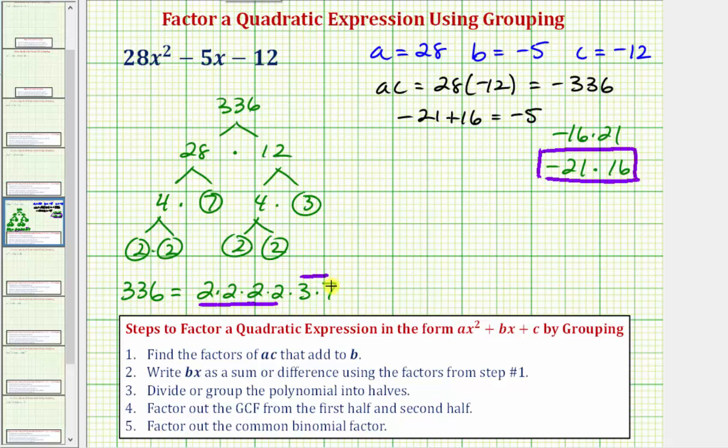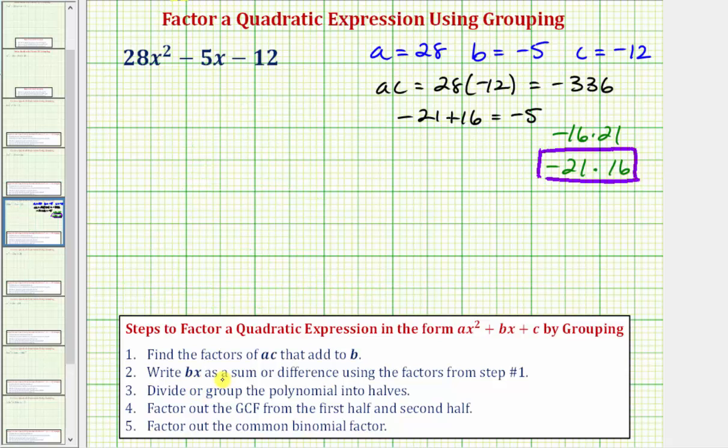So for step two, we're going to write the bx term, or in this case, negative five x, as a sum or difference using the factors from step one. Which means we're going to rewrite the given expression as 28x squared, and then we'll write negative five x as minus 21x plus 16x. So minus 21x plus 16x is still negative five x, and then we have minus 12.